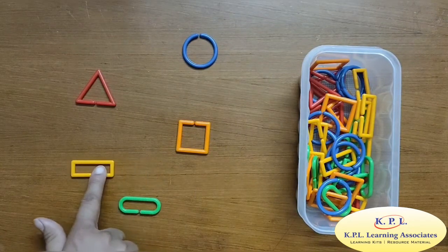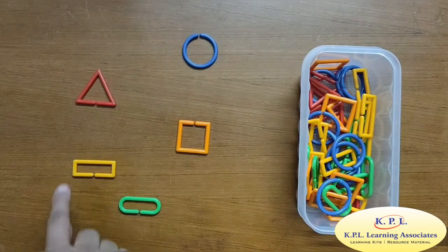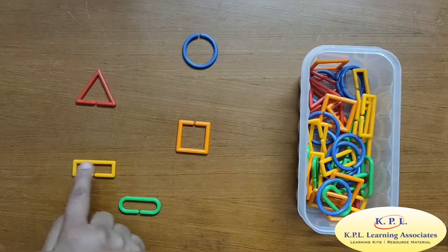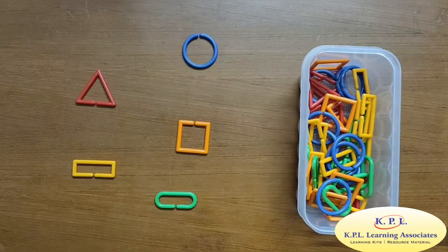This is rectangle, also with four sides and four corners, but here the opposite sides are equal. This is an oval. It has rounded edges.